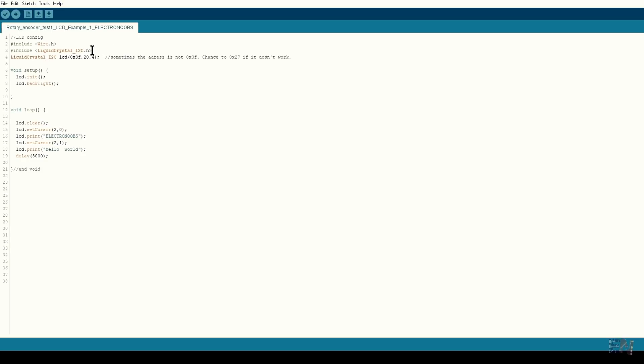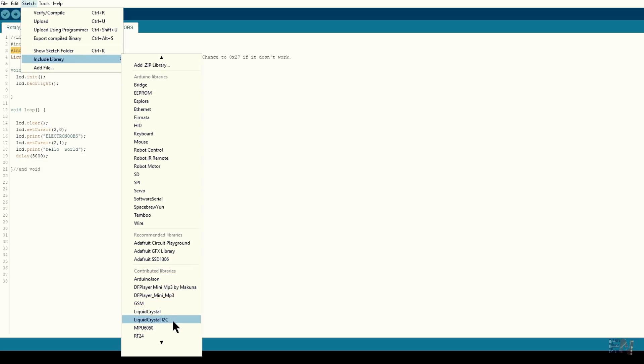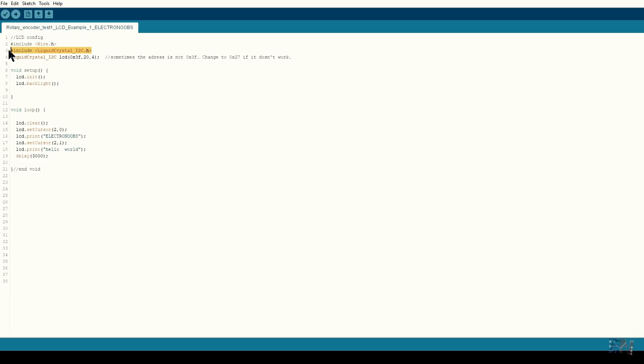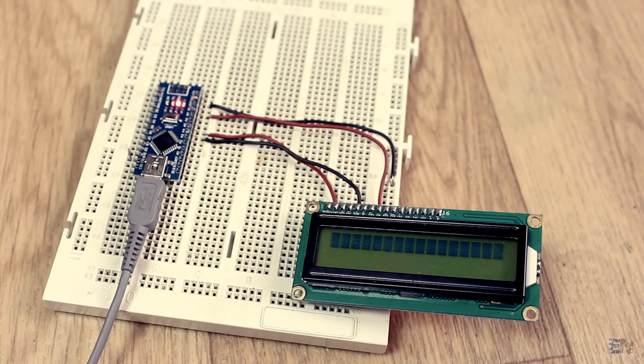So first download and install the I2C liquid crystal library below and install it to the Arduino IDE. Without this library the code won't work. Inside the code, we first import the library. We define the slave address for this screen, which is usually 0x3F or 0x27 in hexadecimal. So if your screen doesn't work with the first address, try both of these slave addresses. Inside the setup loop, we use the init and backlight function to start the LCD and also to power the backlight. Now let's print something. We clear the LCD, set the cursor to the first row and second column position and we write electronoobs. Now we set the cursor to the second row and write hello world. Add a small delay, upload the code and let's see the results. There you go, easy right?